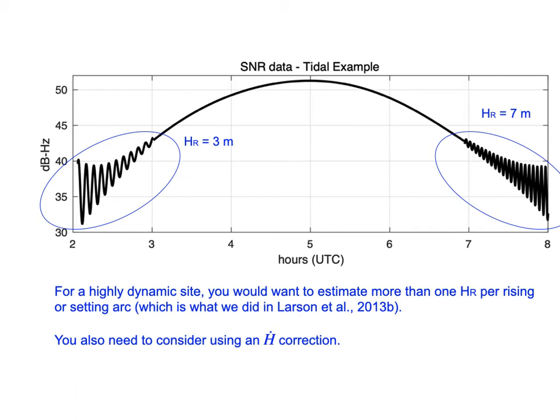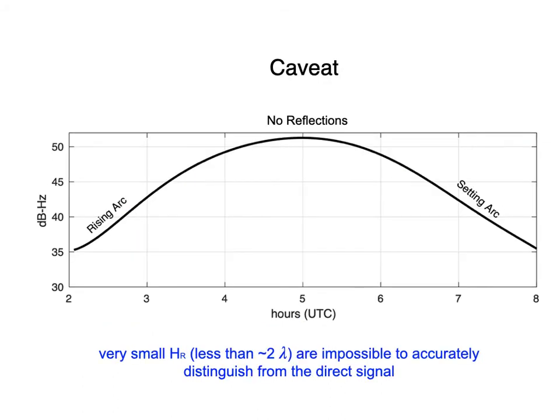There is also an H-dot correction, which we won't discuss here, but it is absolutely something to account for. A key caveat: because SNR has a direct signal effect that looks like a polynomial, you won't be able to resolve very small H_R values — less than about two sigmas. Since sigma is 19 to 24 centimeters, that means you shouldn't use this technique to estimate reflector heights below about 50 centimeters.